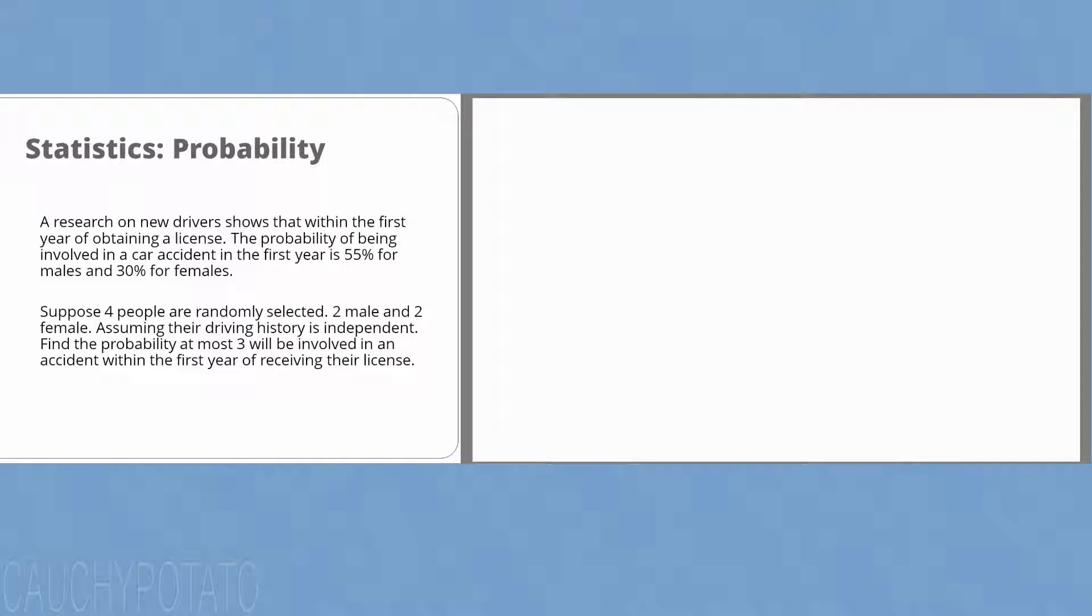Suppose four people are randomly selected, two male and two female. Assuming their driving history is independent, find the probability at most three will be involved in an accident within the first year of receiving their license.